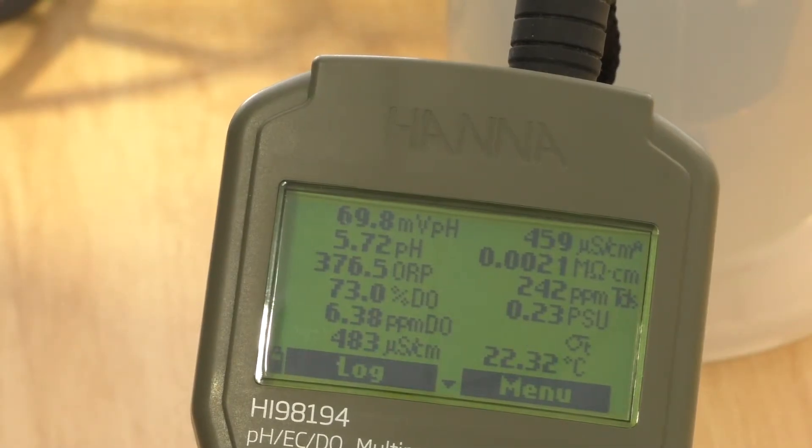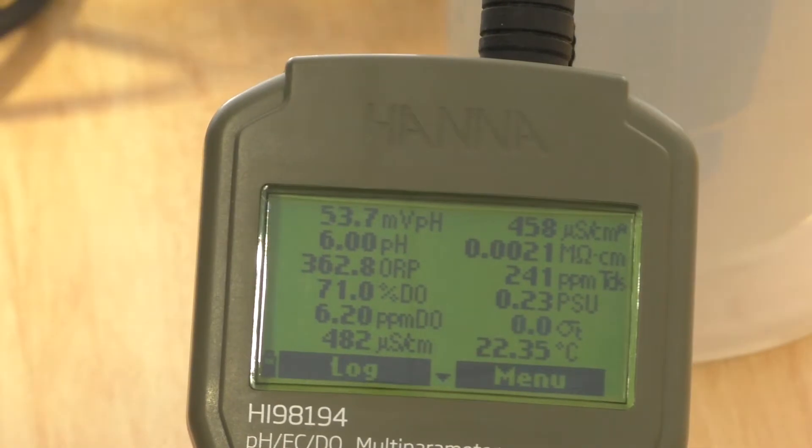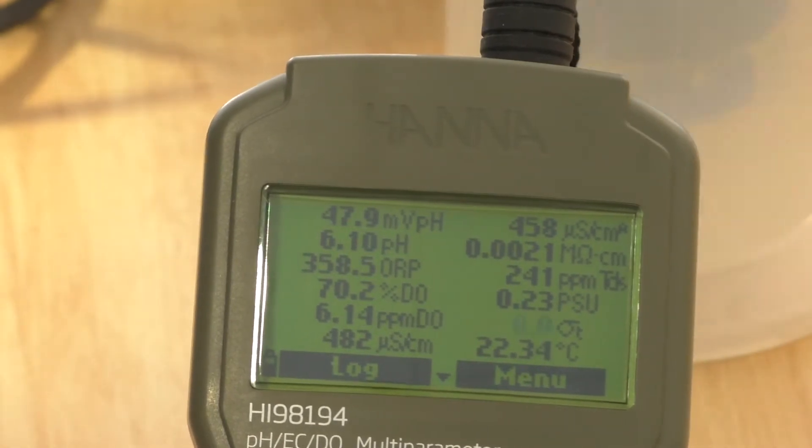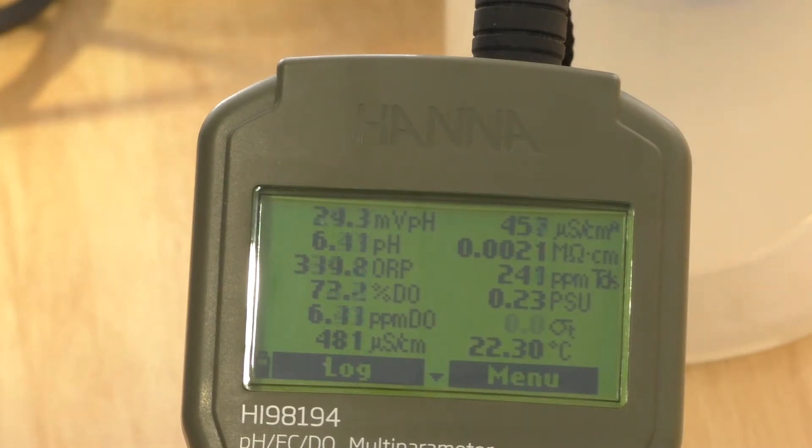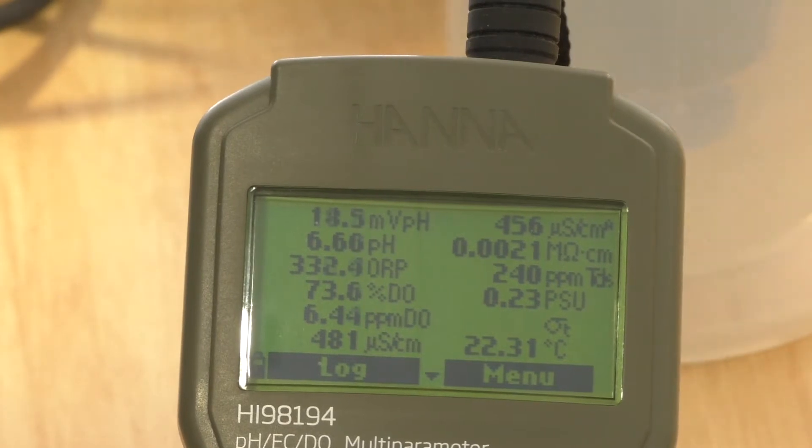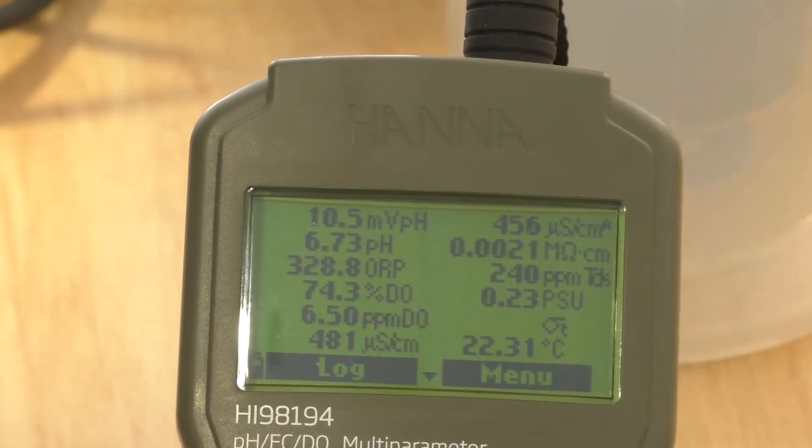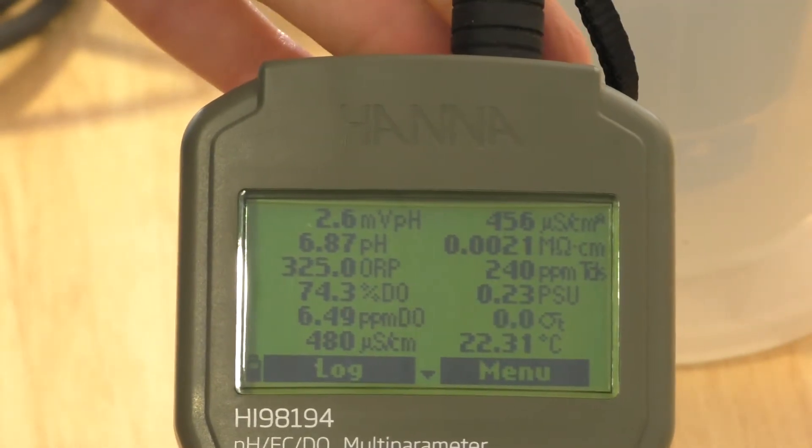So we're just testing it in some tap water and you'll see the parameters all come back up. Just as with all water quality meters, you need a bit of movement of the water past the sensors for the quickest response. And this is sort of roughly what we'd expect from tap water.